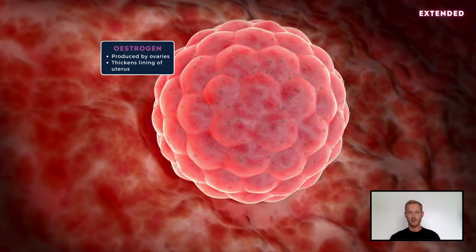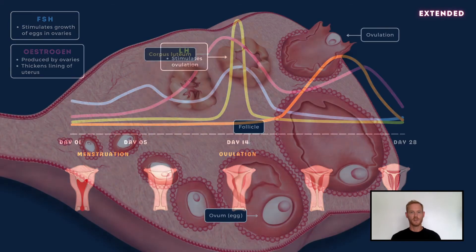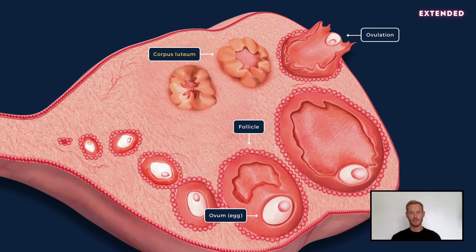These changes allow the embryo to implant if the ovum is fertilised. The rise in oestrogen levels stimulates the pituitary gland to release luteinising hormone or LH. LH causes ovulation, or the release of an ovum from an ovary. Once the ovum has been released, which usually takes place on around day 14 of the cycle, the empty follicle transforms into a corpus luteum, which begins to secrete another hormone called progesterone.